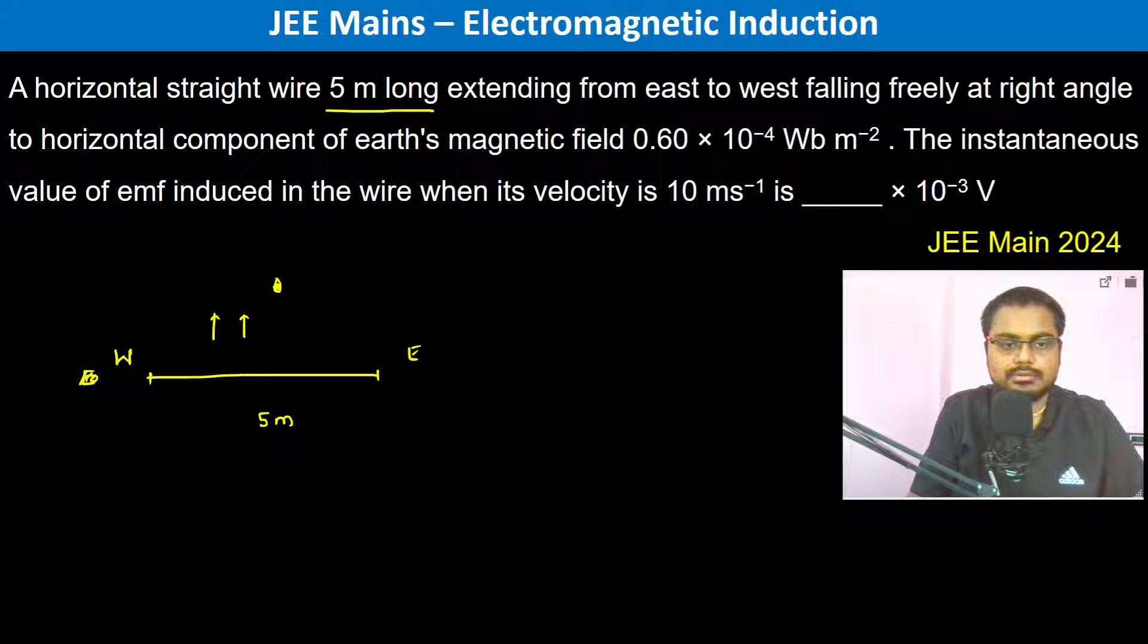This is B. The instantaneous value of EMF induced in the wire—the velocity is in this direction, going onwards.